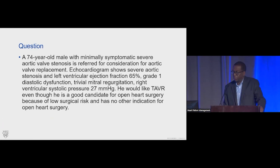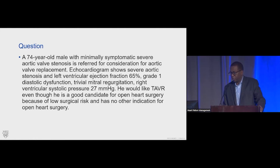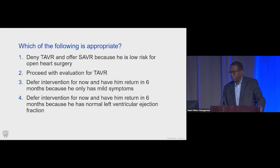Here's a question: a 74-year-old male with minimally symptomatic severe aortic valve stenosis is referred for consideration for aortic valve replacement. Echocardiogram shows severe aortic valve stenosis, left ventricle ejection fraction of 65% (normal EF), grade 1 diastolic dysfunction, no other valvular heart disease, and normal pulmonary pressures. He would like TAVR even though he's a good candidate for open-heart surgery due to low surgical risk and has no other indications for open-heart surgery. So what would you do for him?